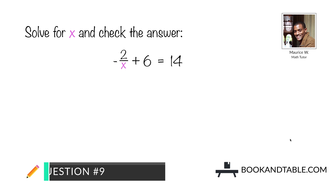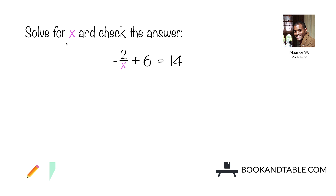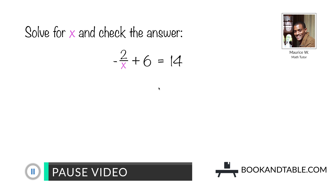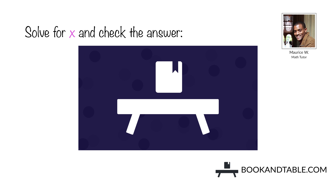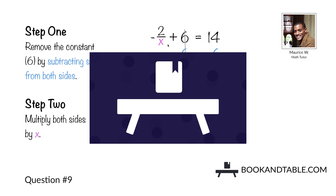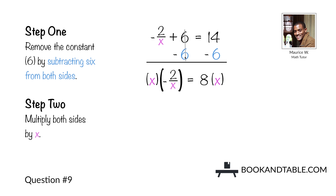Question number nine: solve for x and check the answer. Negative 2x plus 6 is equal to 14. Step one: remove the constant positive 6 by subtracting 6 from both sides. That leaves you with negative 2 over x is equal to 14 minus 6, which is 8. Step two: we don't want x in the denominator, so we multiply both sides by x. x divided by x would be 1, but 8 times x gives us 8x.